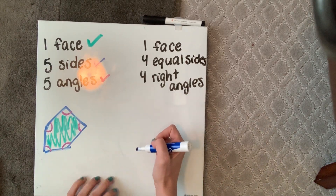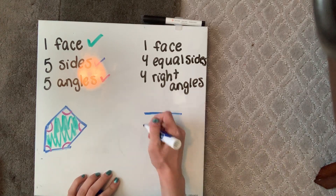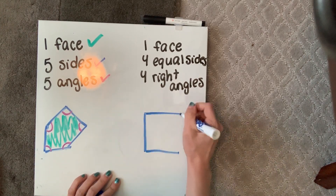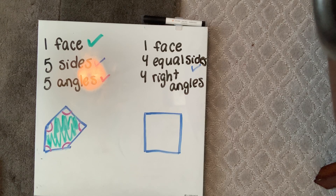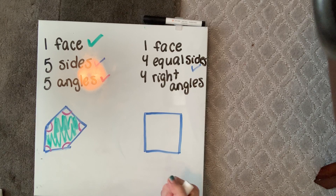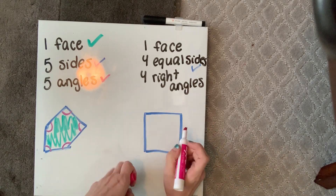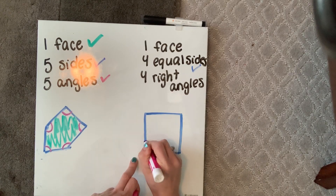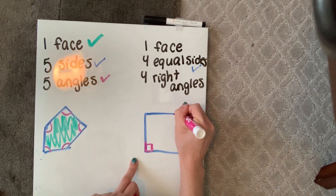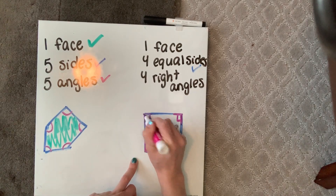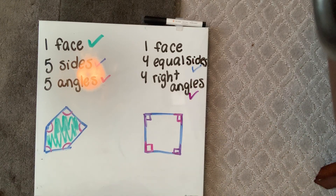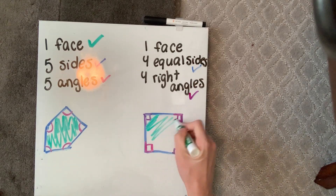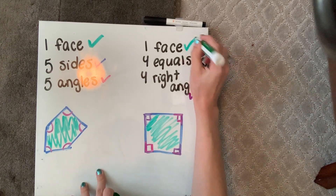I'm going to start with my four equal sides — make them all the same size: one, two, three, and four equal sides. They're all the same size; not one smaller or bigger than another. Now our right angles — let's make sure all of our angles look like L's, coming perfectly to that point. I see a little L right here, a little L right here, right there, and right there. Four right angles. And one face — it's a 2D shape, not a 3D shape. Check it off.